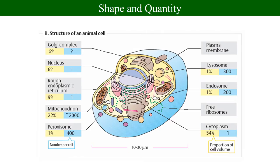This figure from a biochemistry atlas shows the shape of molecules and their proportions in a cell. There is only one nucleus in a cell, occupying about 6% of cell volume. There may be about 2,000 mitochondria in a cell, occupying about 22% of cell volume. Lysosomes — perhaps only 300 per cell — occupy only 1% of cell volume, meaning they are really very small. This illustrates the diverse shapes of cellular components.